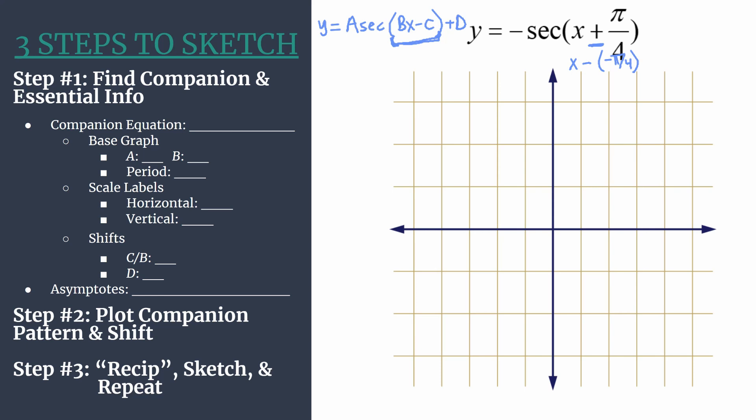So step 1, we're going to find our companion equation. Simply rewrite our equation, replacing secant with cosine. So we're going to get information on y equals negative cosine of x plus pi over 4.